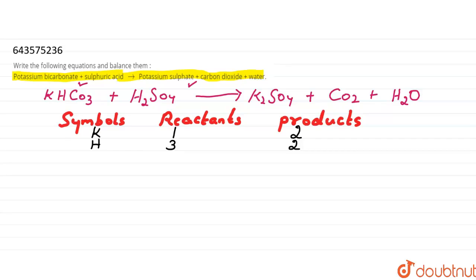Next, carbon atoms: one on the reactant side, and one on the product side. Then oxygen atoms: three from potassium bicarbonate plus four from sulfuric acid, totaling seven on the reactant side; and four plus two plus one equals seven on the product side. Sulfur S: one on the reactant side and one on the product side.